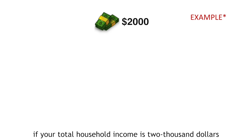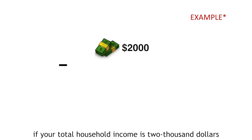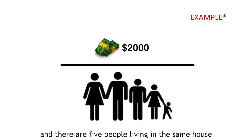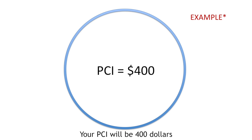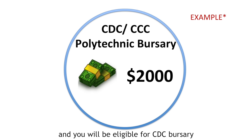For example, if your total household income is $2,000 and there are 5 people living in the same house, your PCI will be $400 and you will be eligible for the CDC Bursary.